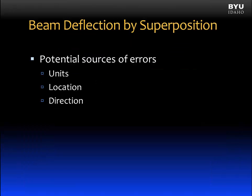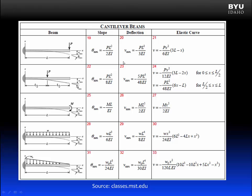Now when using the beam deflection by superposition, there are some potential sources of error that should be mentioned. First of all, the units. If you look at the equation shown, the variables are, for example, in this first row, P is the load, L is the length, E and I is the flexural rigidity, where E is the modulus of elasticity, and I is the moment of inertia. If we are considering U.S. customary units, the units for modulus of elasticity are typically kips per square inch. For moment of inertia, typically inches to the fourth power.